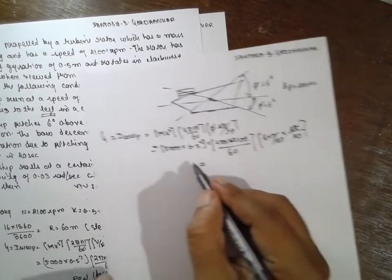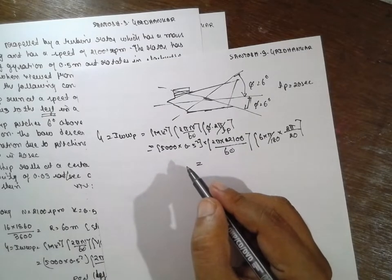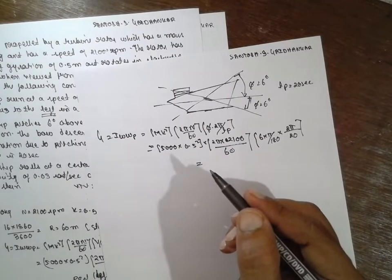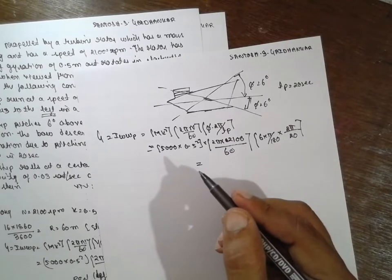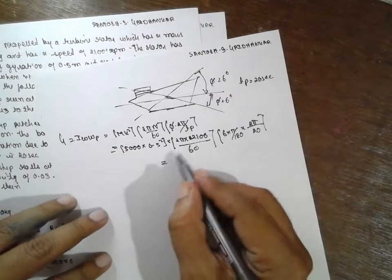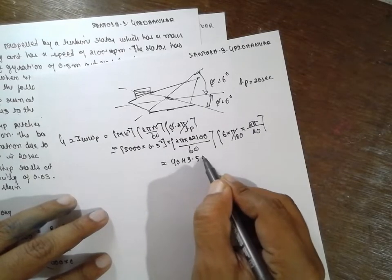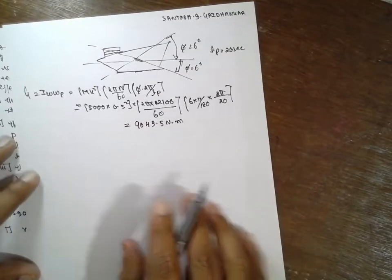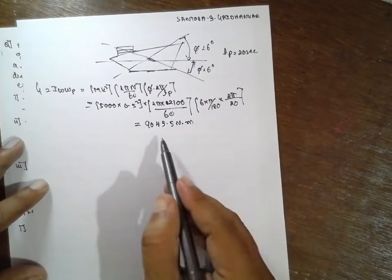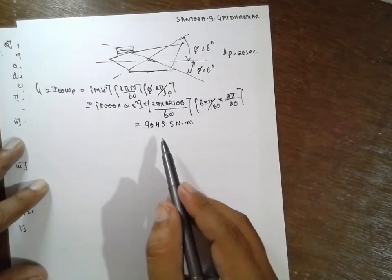The answer for this one, answer for this one, 9043.5 Newton meter. Now if you want to go for the direction.